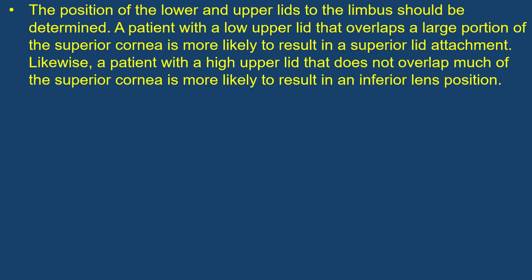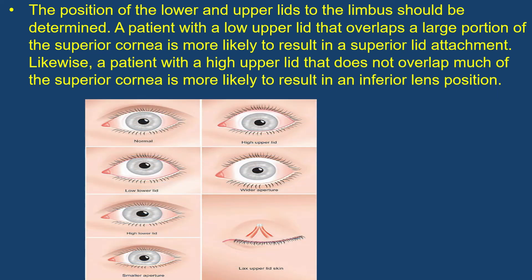Similarly, the position of the lower and upper lids to the limbus should be determined. A patient with a lower upper lid that overlaps a large portion of the superior cornea is more likely to result in a superior lid attachment.